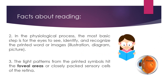In the physiological process, the most basic step is for the eyes to see, identify, and recognize the printed words or images — that could be an illustration, a diagram, or a picture. The light patterns seen from these printed symbols will hit the foveal areas, or closely packed sensory cells of the retina.